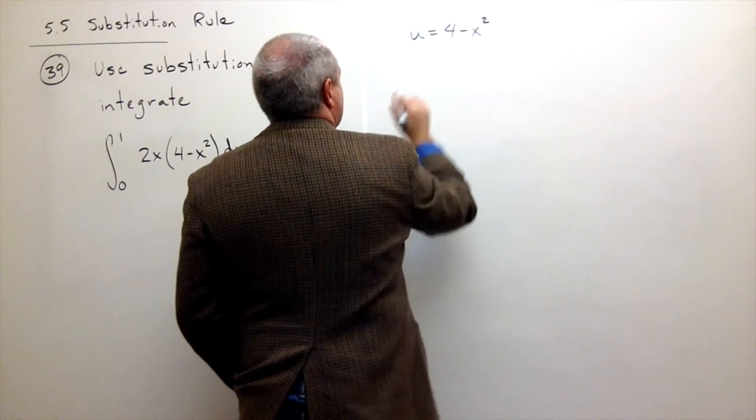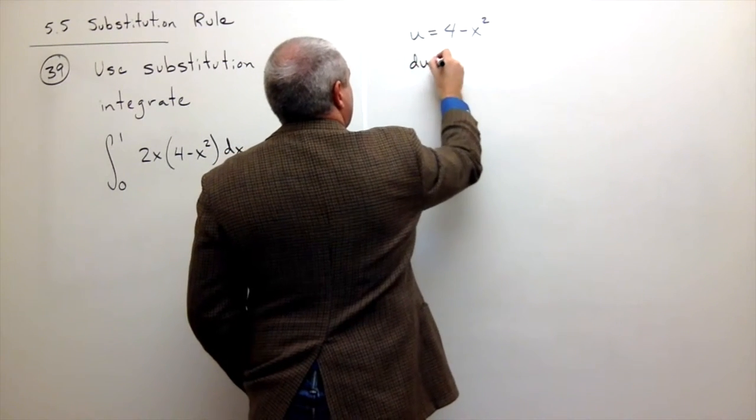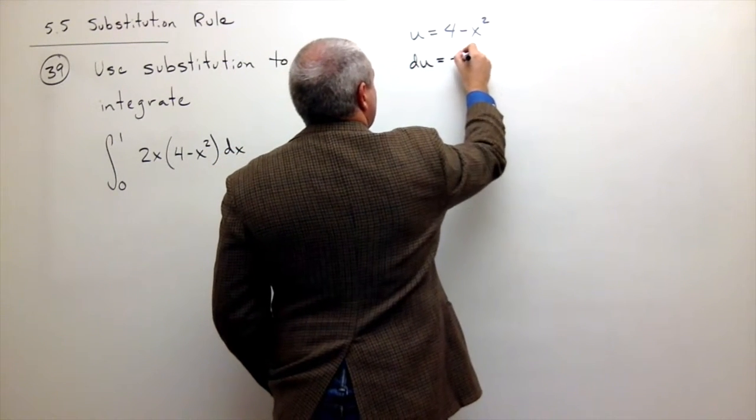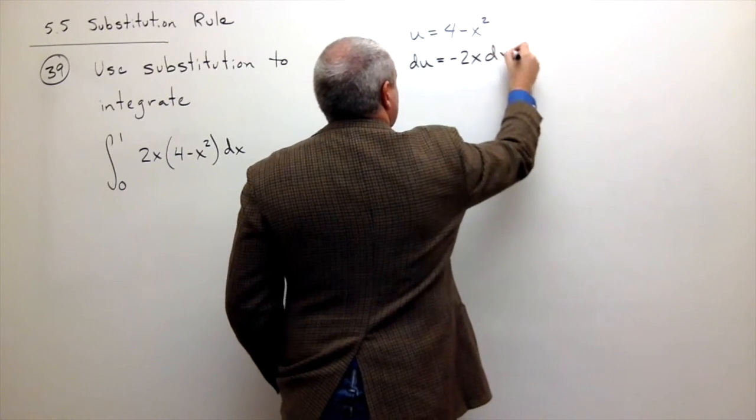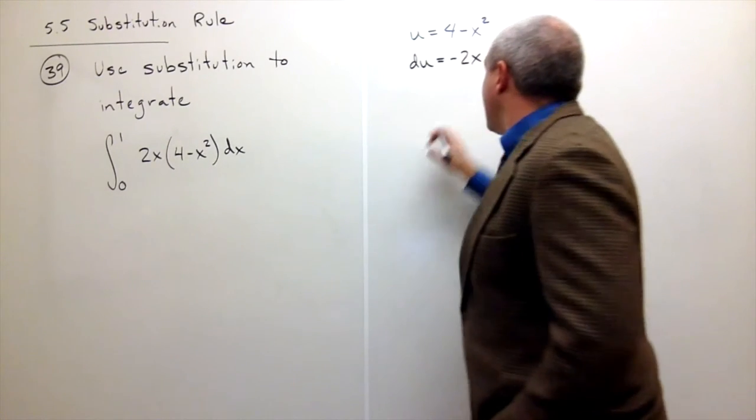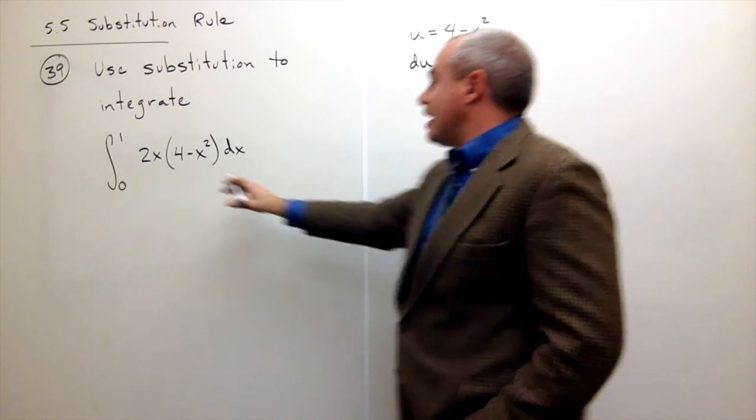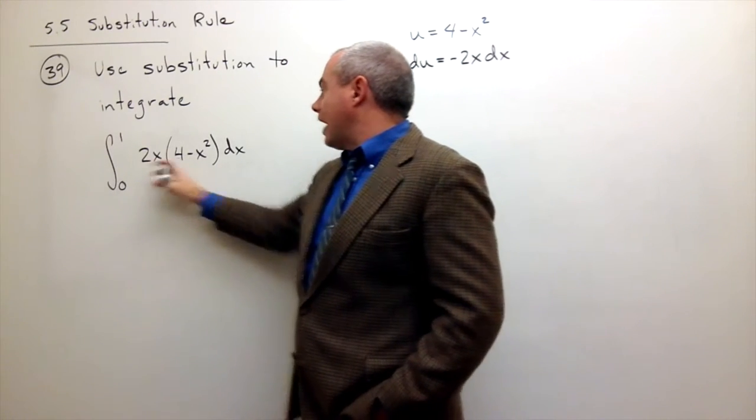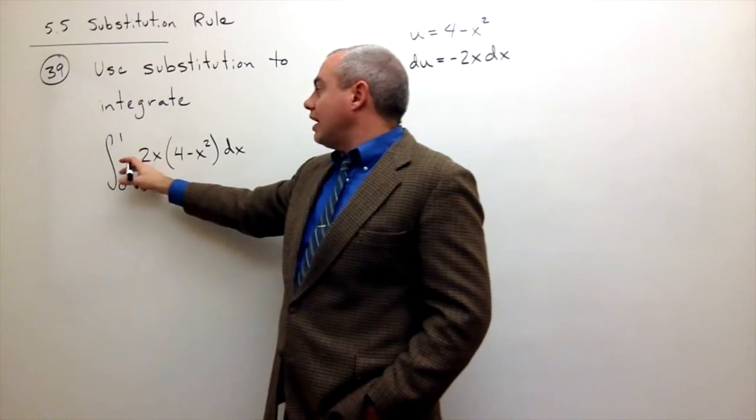Let's let u be equal to 4 minus x squared. If u is 4 minus x squared, then du is equal to negative 2x dx. Now, I don't have a negative 2x dx in here, I have a 2x dx. So all I need is a negative.